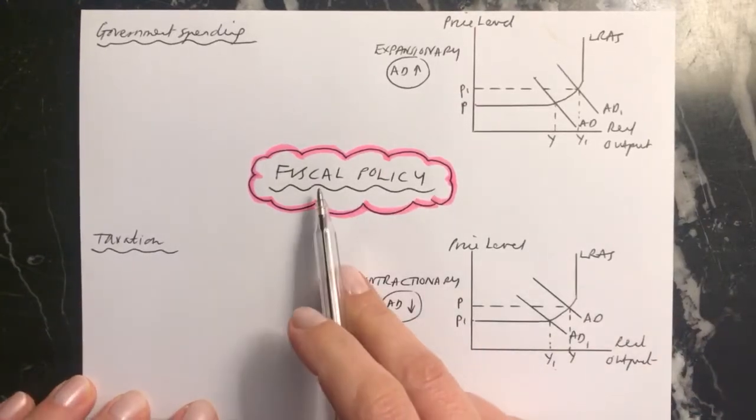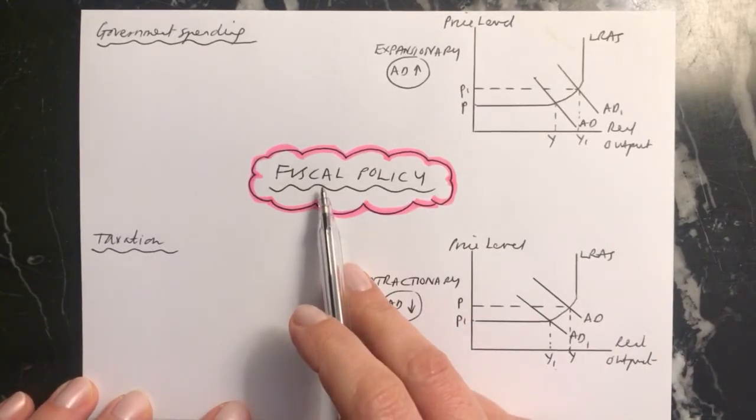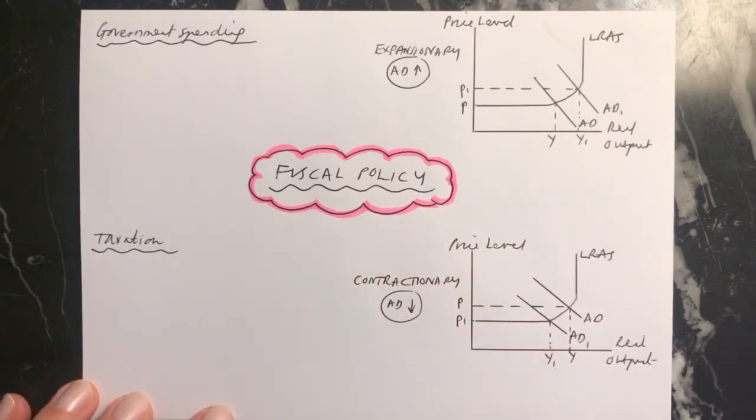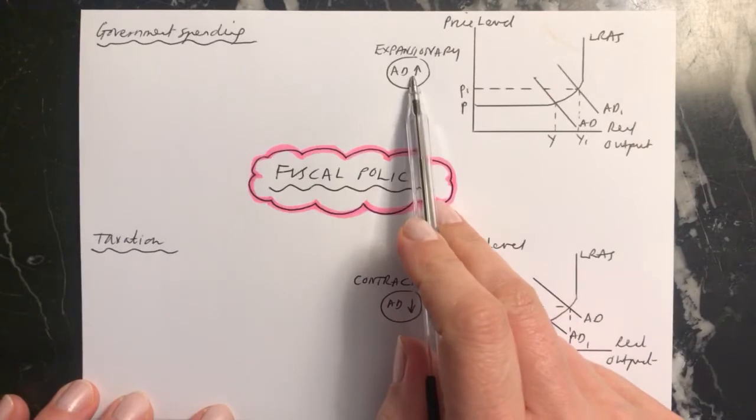Here I'm going to explain how fiscal policy works. This is a type of demand-side policy that is put in place by the government to impact the aggregate demand in the economy.